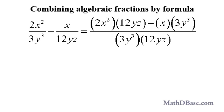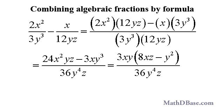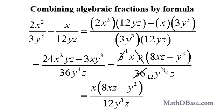Let's do the last example using the formulas. Subtracting x over 12yz from 2x squared over 3y cubed, using the first of the subtraction formulas, we cross-multiply the terms, expand, factor out the common 3xy term, then cancel.